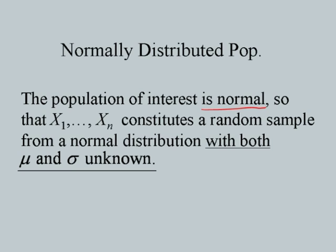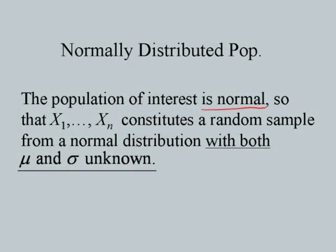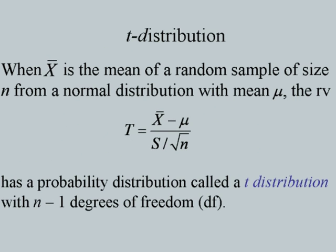So far we have worked out the confidence interval when sigma — the population standard deviation — is known. Now let us look at the situation where the population of interest is normal, but both mu and sigma are unknown: X1, X2, ..., Xn constitute a random sample from a normal distribution with both mu and sigma unknown. The distribution of the sample mean would also be normal, but we cannot use the normal-based CI because it requires sigma, which we don't know.